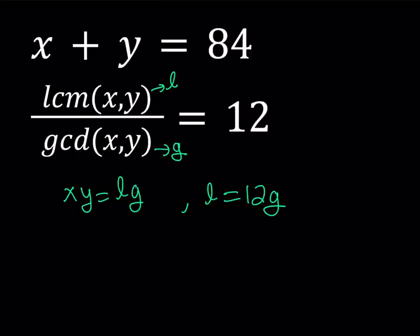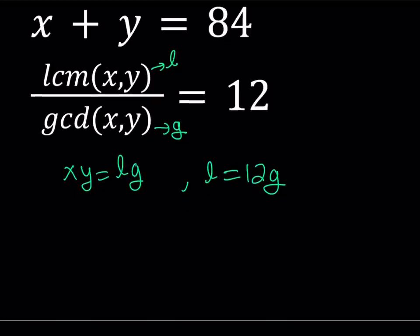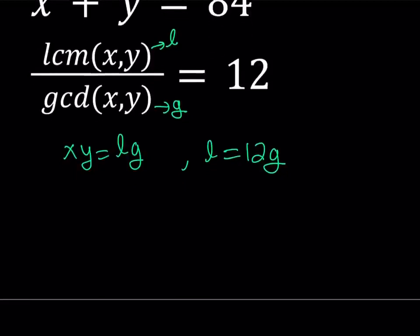So if L stands for the LCM and G stands for the GCD, I can write down an equation like this: xy equals LG. That's the product L times G.